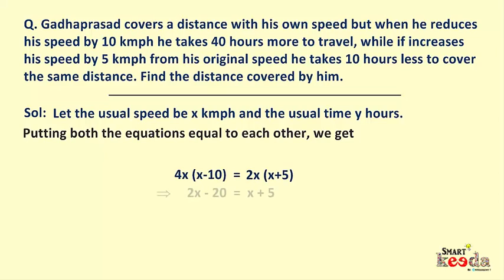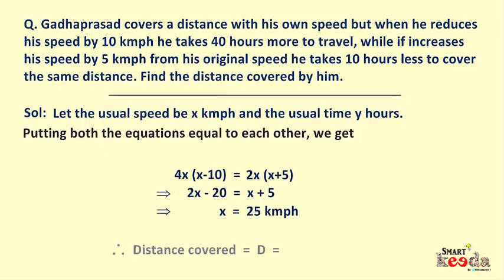Simplifying, we get 2x−20 = x+5, and on further solving x = 25 km per hour, which is the usual speed. Now we can find the distance by putting x into the second distance equation: 2x(x+5) = 2(25)(30) = 50 × 30 = 1500 km. And that's the answer. So wasn't it simple? I hope it was.